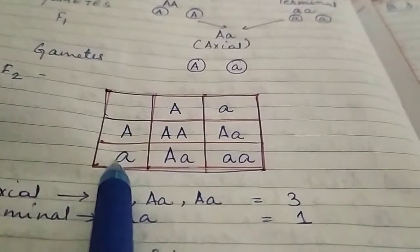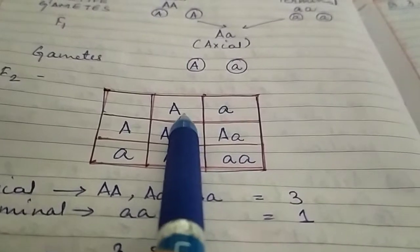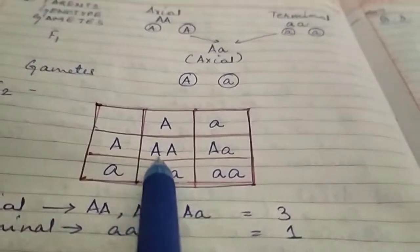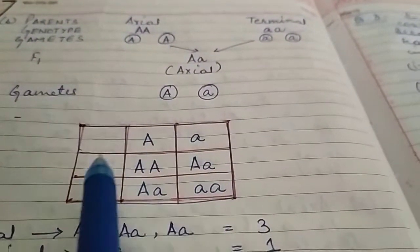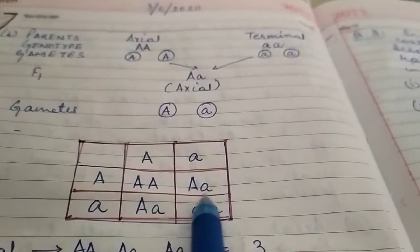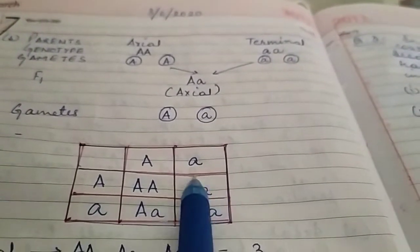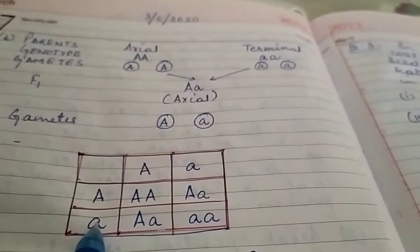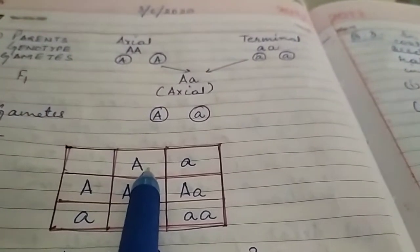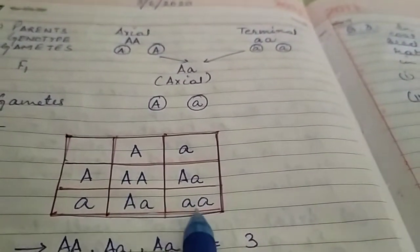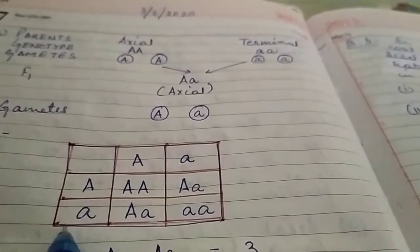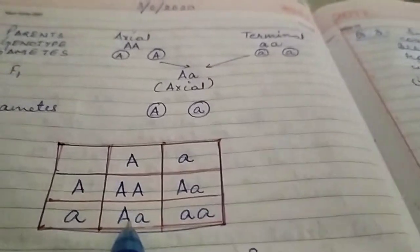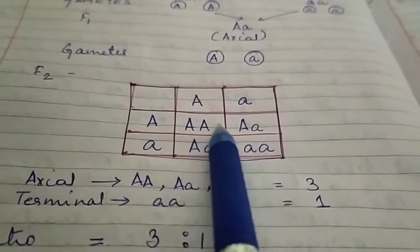Capital A × capital A gives the combination AA. Capital A × small a gives Aa. Then small a × capital A gives Aa. The fourth box is small a × small a giving aa. These four individuals represent the genotypes of the offsprings from the F2 generation.